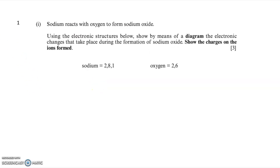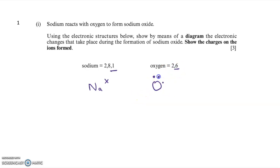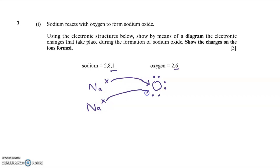In this first question, I'm asked to draw a bonding diagram for sodium oxide. Now sodium is a metal and oxygen is a non-metal, so we have ionic bonding here. I'm going to draw a sodium atom Na and put one cross to represent the one electron in the outer shell, and I'm going to draw an oxygen atom with six dots around it representing the six electrons in the outer shell. Elements bond together to gain full outer shells, which are stable arrangements.